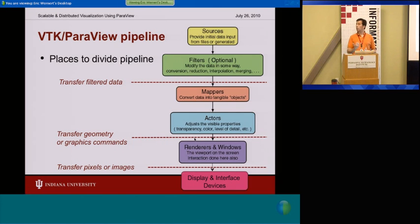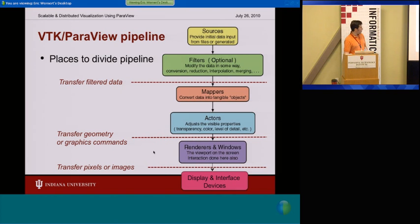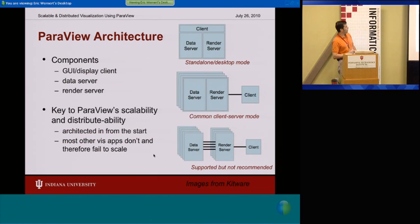That's the default mode for the client-server mode in ParaView. The back end sends the graphics commands or geometry to your local renderer, assuming most people have some type of hardware acceleration. Or in some cases you might actually want to have rendering done on the back end and just transfer images or pixels to be reassembled on your screen. So you have a couple of different interesting client-server architectures.